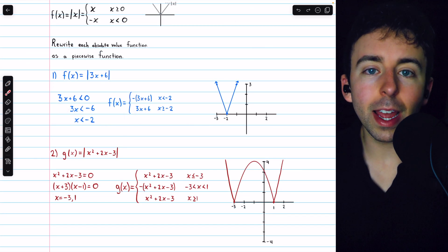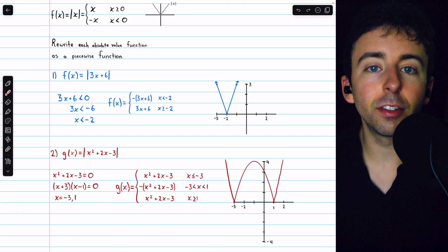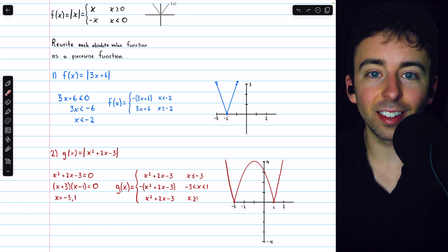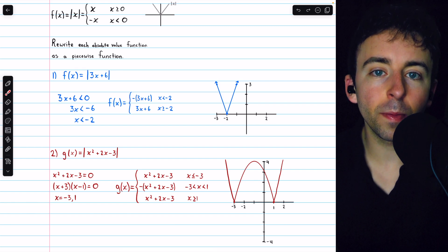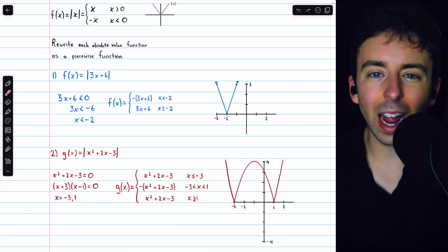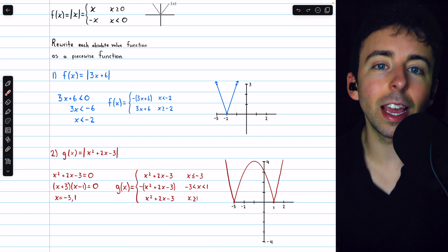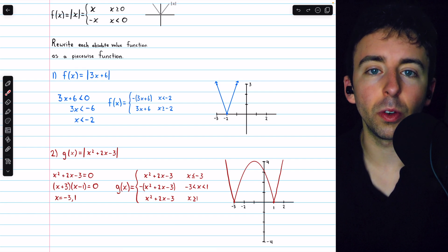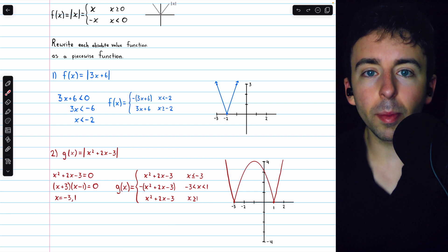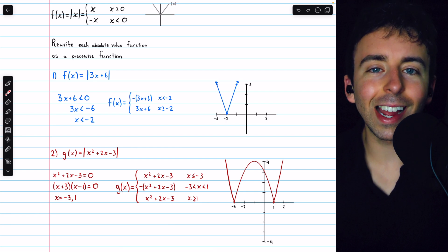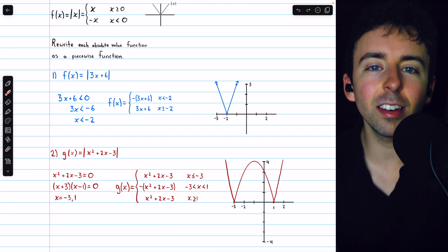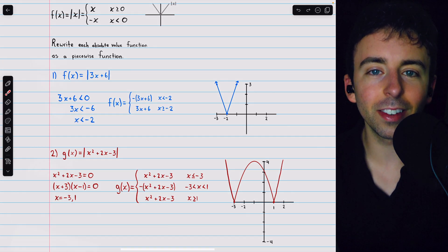So that's how to rewrite absolute value functions as piecewise functions. Everywhere on the domain where the thing inside the absolute value function is positive, the absolute value function doesn't change it. But wherever the inside is negative, the absolute value will hit it with an additional negative to make it positive. Let me know in the comments if you have any questions, and be sure to check out my Precalculus Course and Precalculus Exercises playlists in the description for more.